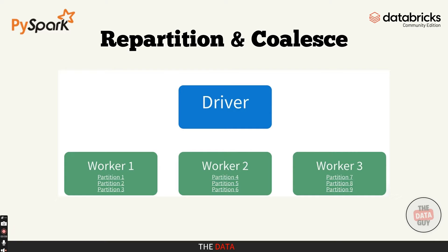When Spark processes data, it splits the data into chunks called partitions. These partitions are spread across the nodes in your cluster, and the more partitions you have, the more parallelism you get, meaning faster processing. But sometimes you might have too few or too many partitions, and this is where repartition and coalesce come in.